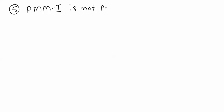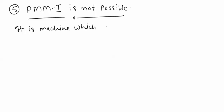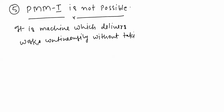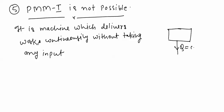The fifth application of the first law of thermodynamics is that PMM1 — the Perpetual Motion Machine of the First Kind — is not possible. A perpetual motion machine of the first kind is a machine which delivers work continuously without taking any input from any source — it will never take any type of input yet continuously supply work output.